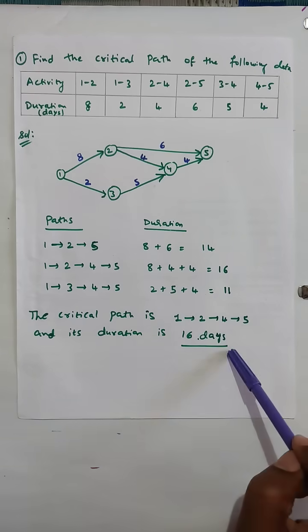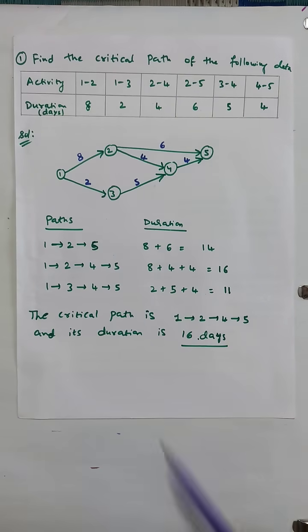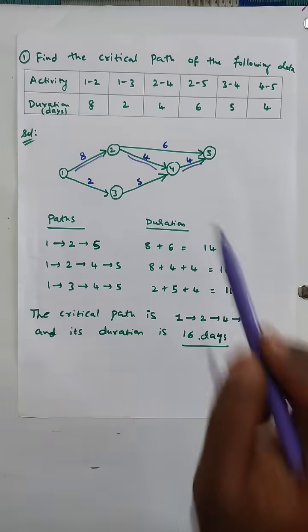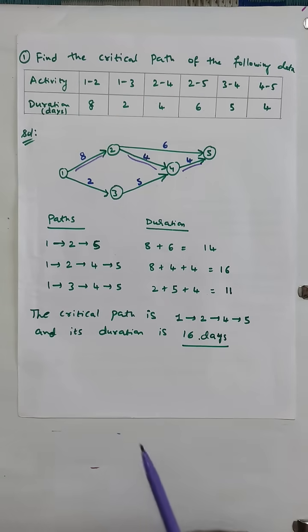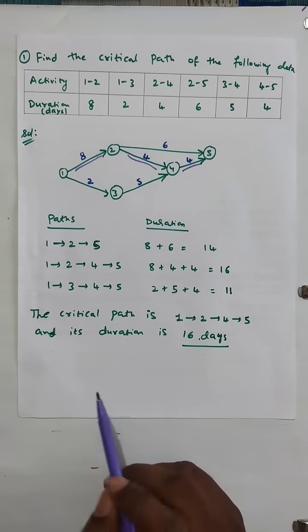So 16 is the project completion time and the path 1-2-4-5 is the critical path. This path 1-2-4-5 is the critical path of this project. The critical path is 1-2-4-5 and the project completion time is 16 days.